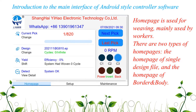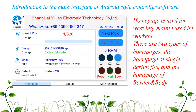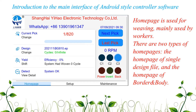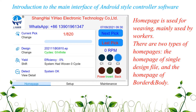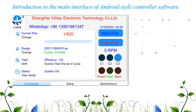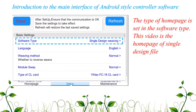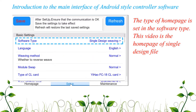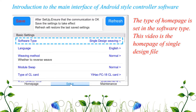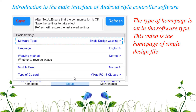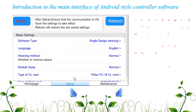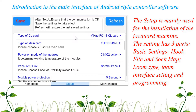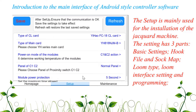There are two types of home pages: the home page of single design file, and the home page of border and body. The type of home page is set in the software type. This video demonstrates the home page of single design file.